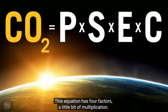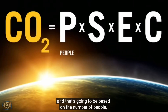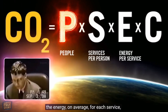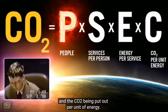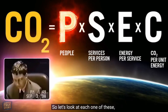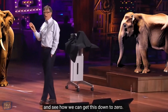This equation has four factors — a little bit of multiplication. You've got a thing on the left, CO2, that you want to get to zero. And that's going to be based on the number of people, the services each person's using on average, the energy on average for each service, and the CO2 being put out per unit of energy. So let's look at each one of these and see how we can get this down to zero.